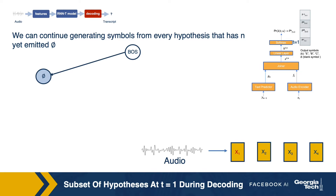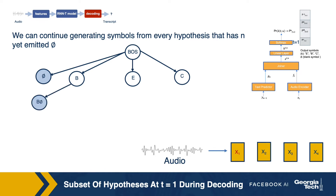The one extension with blank would go to the next audio frame, which is audio frame 2, whereas extensions with the letters B, E, and C will continue to stay at time frame 1. If we then take candidate B and extend it, B-blank would go to audio frame 2, whereas the other extensions B-B, B-E, and B-C will continue to stay in the current time frame.